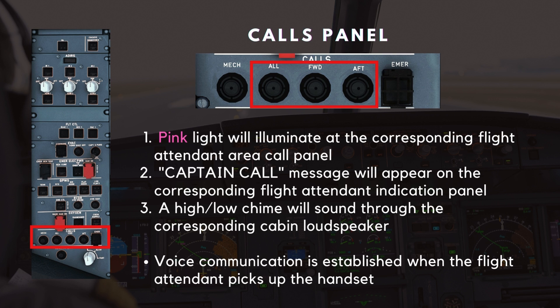When these calls are made, the following indications are observed in the cabin: 1. A pink light will illuminate at the corresponding flight attendant area call panel. 2. A captain call message will appear on the corresponding flight attendant indication panel. 3. A high-low chime will sound through the corresponding cabin loudspeaker. Voice communication is established between the flight attendant station and the flight deck when the flight attendant picks up the handset.